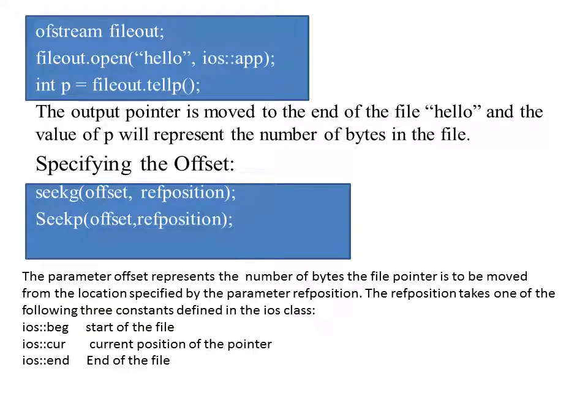In the example shown in the top blue box on this slide, we create a stream: ofstream file_out. file_out opens a file 'hello' in append mode, which means the put pointer will move to the end of the file. Then file_out.tellp() tells us the current position of the put pointer, which equals the number of the last byte — the end of the file. Since the file is opened in append mode, that last position, like 20, 30, or 50, stored in int p, tells us the size of the file in bytes.